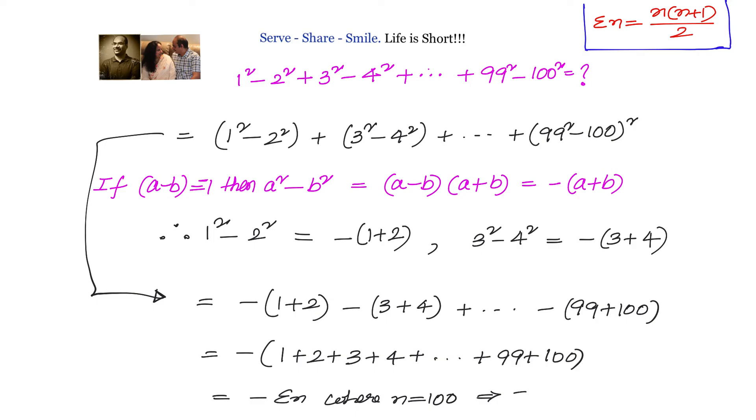n equals to 100 will give us 100 into 101 divided by 2. With a minus, 2 will go 50 times. 50 into 101 is 5050. So the sum, the value of 1 square minus 2 square plus 3 square minus 4 square up to 99 square minus 100 square, is equal to minus 5050.